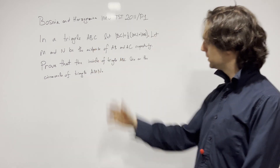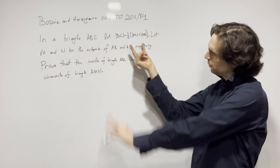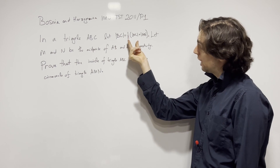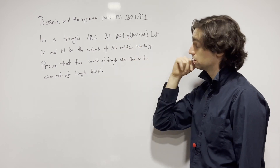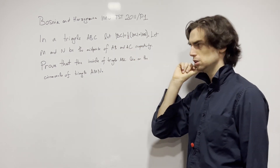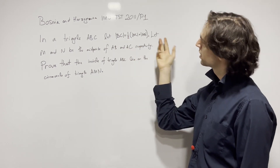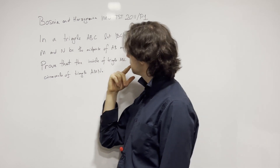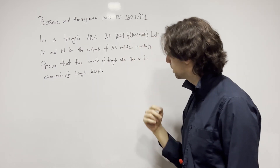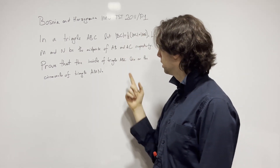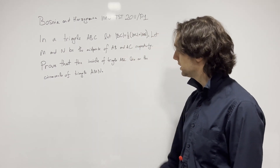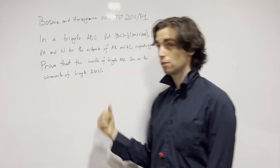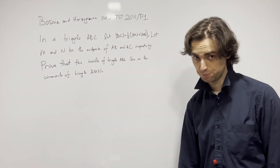So what do we see? We see a geometry problem with BC equal to half of AC plus AB. Let M and N be the midpoints of AB and AC, and the incircle of ABC lies on the circumcircle of the triangle AMN.